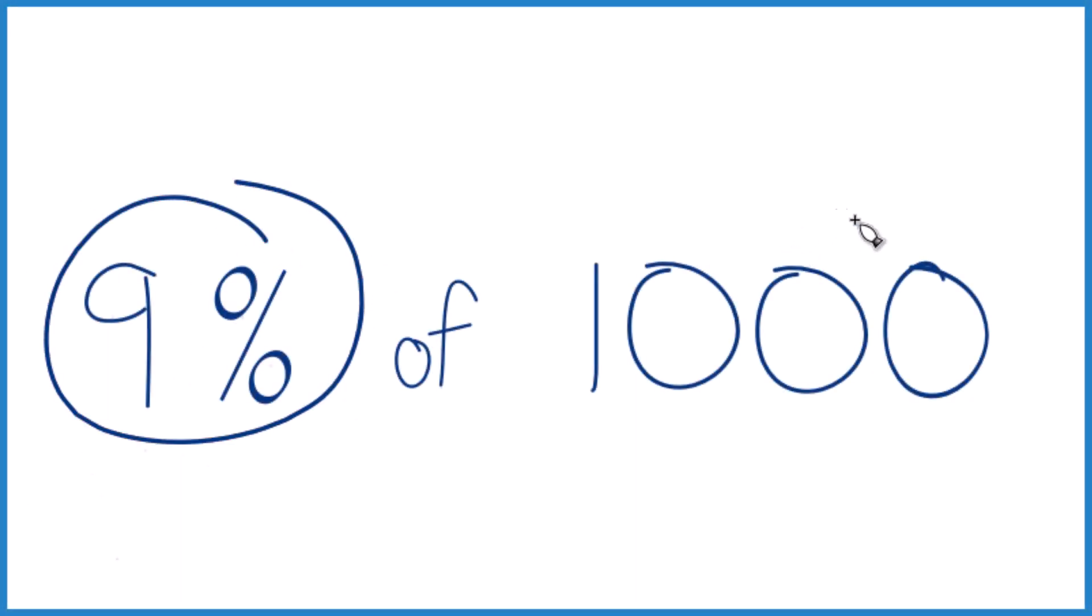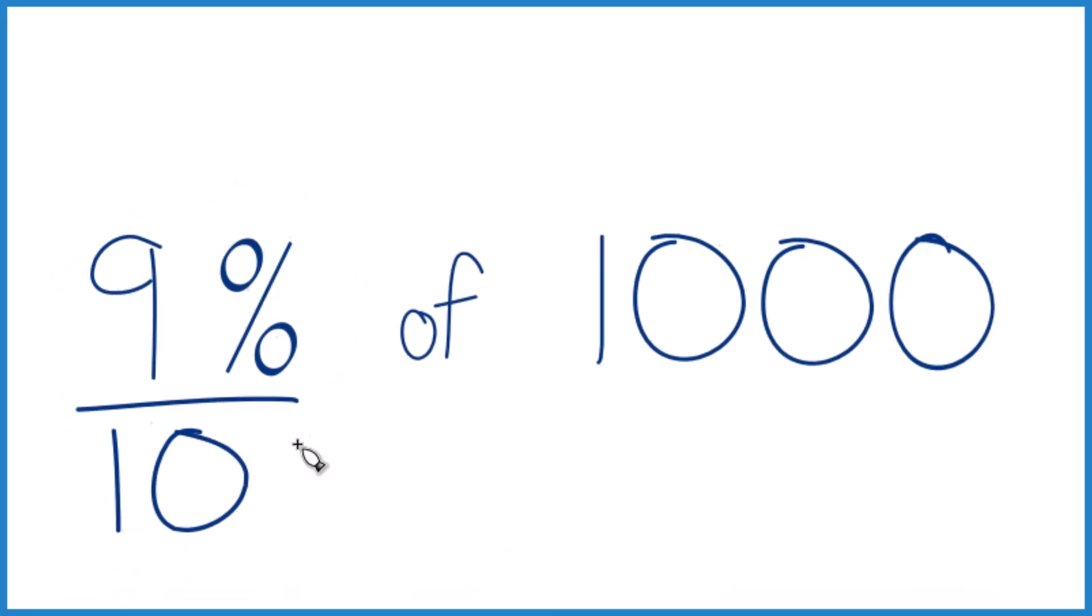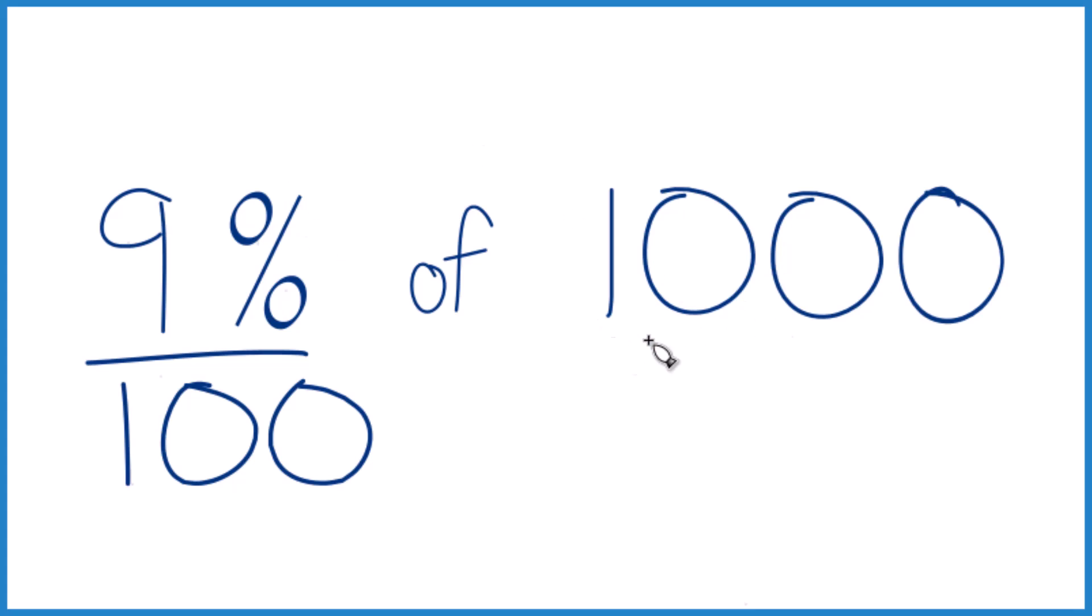Let's take 9% of 1,000. Here's how I think about it. 9% percent means per 100. So if I had just 100 here, 9% would be just 9.